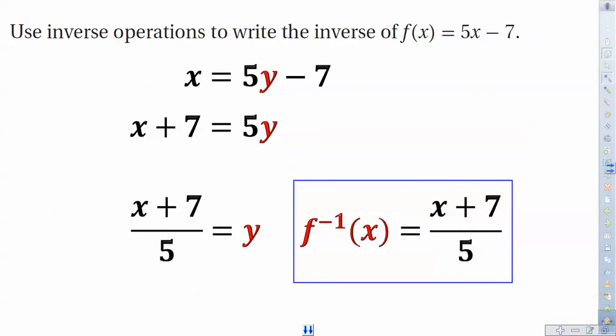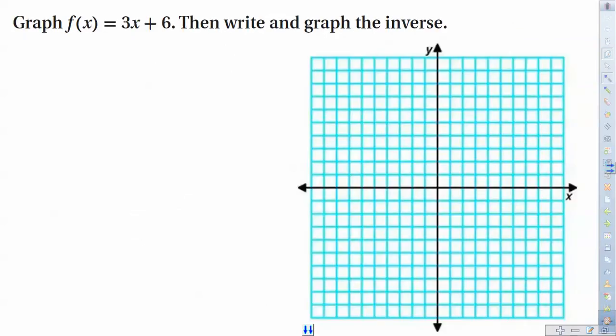Then we can slap that inverse of f(x) notation on there. There's your inverse. Let's take a look at this situation. Suppose we want to graph this function and then write and graph the inverse. I will say it doesn't really matter what order you want to do this. There's going to be some situations where maybe graphing the inverse and then getting the function from there can actually be a good move. The whole purpose is just to get you to see how those inverse functions are related.